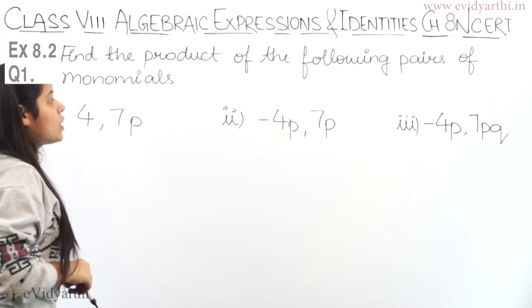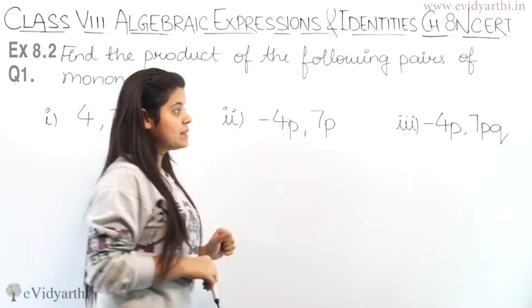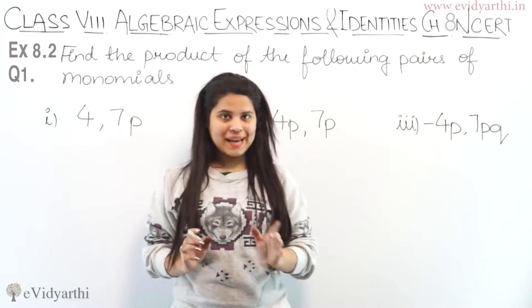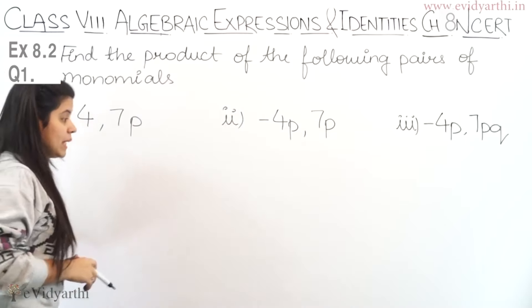In this question, find the product of the following pairs of monomials. Here you have some monomials given and you have to find the product. Product means that you have to multiply them. The first one is 4 and 7P.